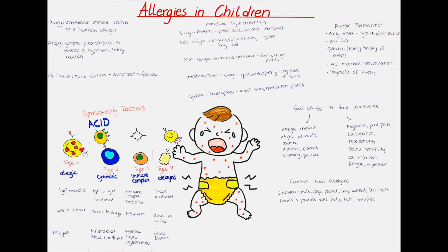For the intestinal tract, an allergic gastroenteropathy can occur. It presents with vomiting and diarrhea, and is typically caused by the ingestion of various foods. The systemic immediate hypersensitivity, or anaphylaxis, usually presents with wheezing, hypotension and shock, as well as swelling of the eyes and lips, and is often caused by insect venom, medications such as penicillin, or foods such as peanuts.